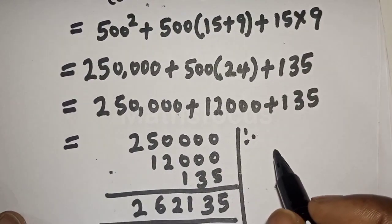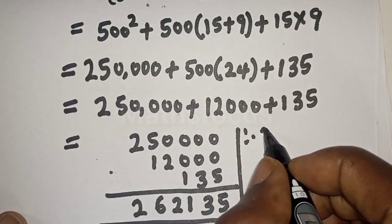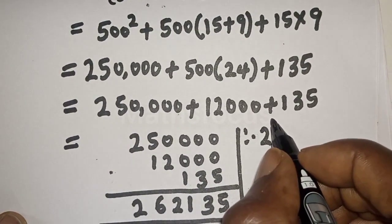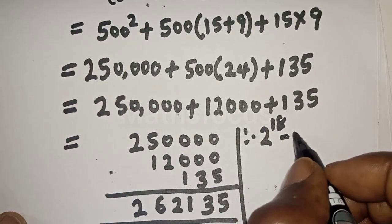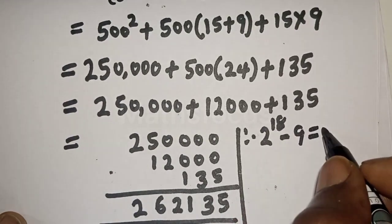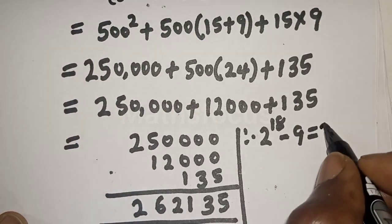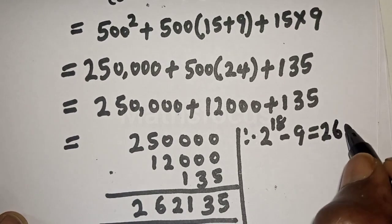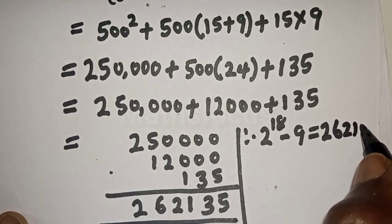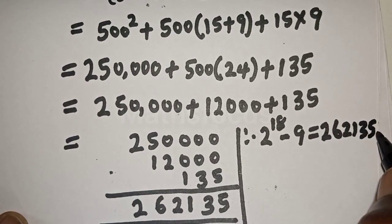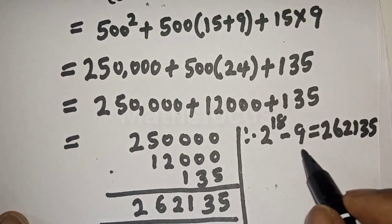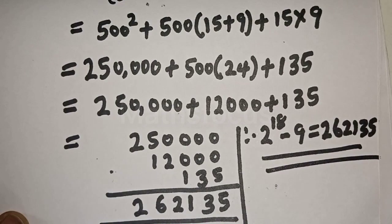Therefore, 2 raised to power 18 minus 9 is equal to 262,135. And this is the final answer.